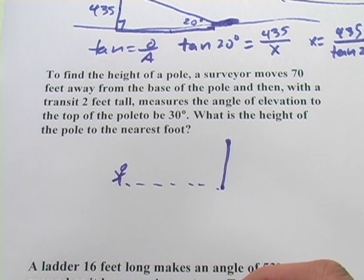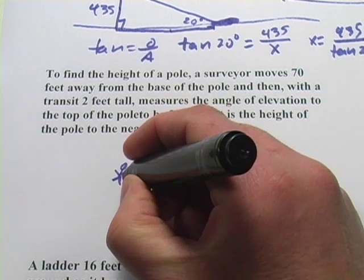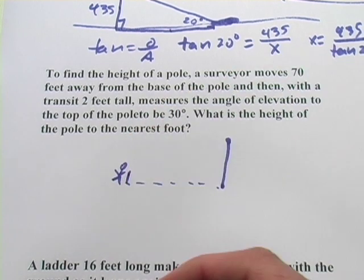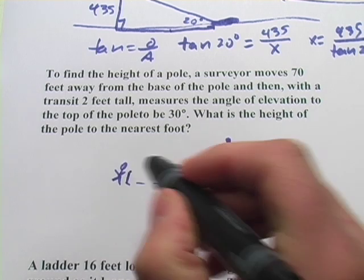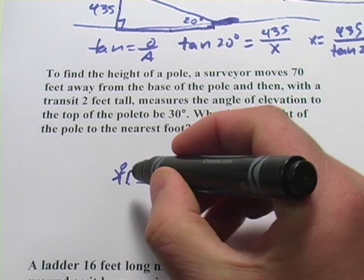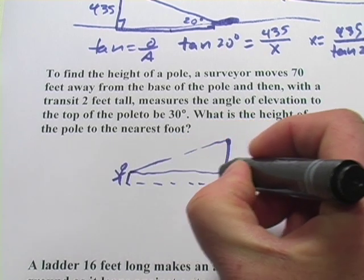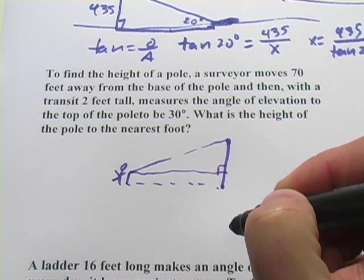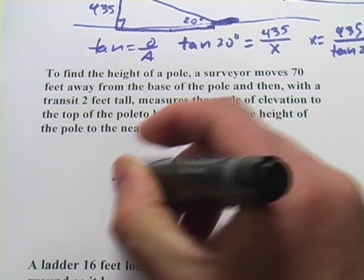And he uses a transit 2 feet tall. So a transit is like a little stick here. It's 2 feet tall, and from the top of the stick, he's sighting up to the top of the pole. So we've got this triangle right here. And what he saw was this is 30 degrees.